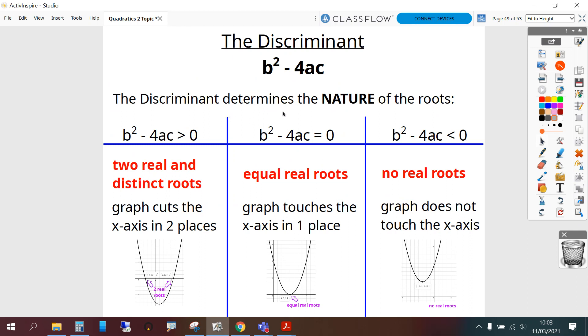The discriminant determines the nature of the roots. So when b squared minus 4ac is greater than 0 that gives us two real and distinct roots. And the graph cuts the x-axis in two places. So that's when b squared minus 4ac is greater than 0 or we say positive.